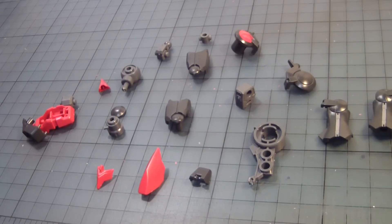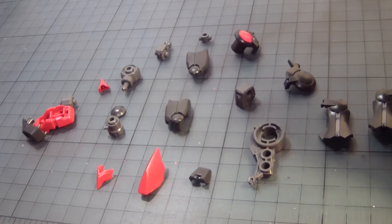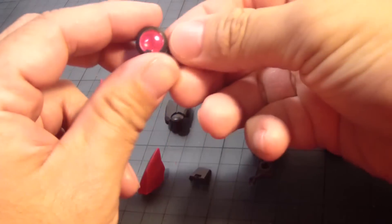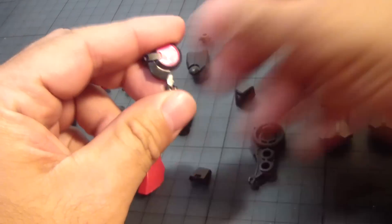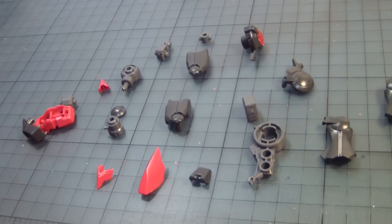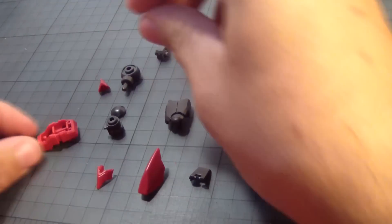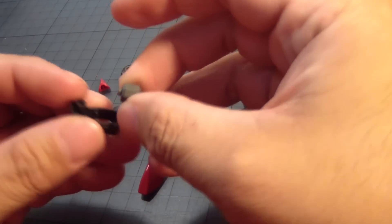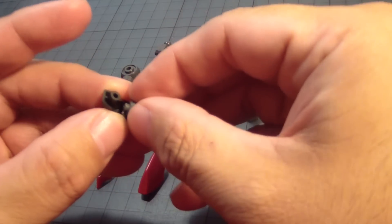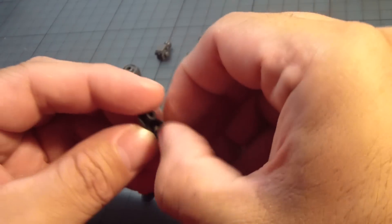So the next part of the build is going to be the leg unit of the Dark Matter Exia. Some parts have to be prepared, like the jewel. It goes here, and portions of the leg. So first up, you want to get this part, flip it upside down, and put the polycap right over it like so.